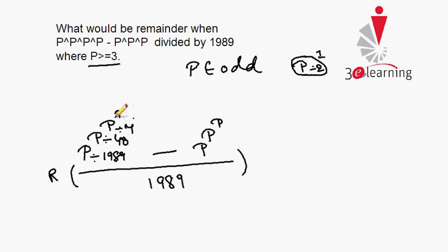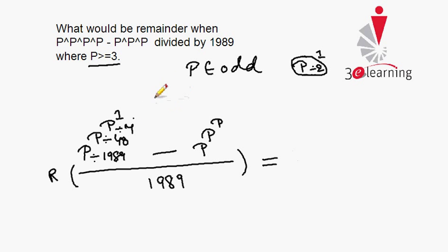Our question becomes: p raised to power p raised to power p, since the top 1 is negligible, minus p raised to power p raised to power p, divided by 1989. Both terms are now the same number. If one gives a remainder of k, the other also gives a remainder of k. So our final remainder is 0. This is the first answer when p is odd.